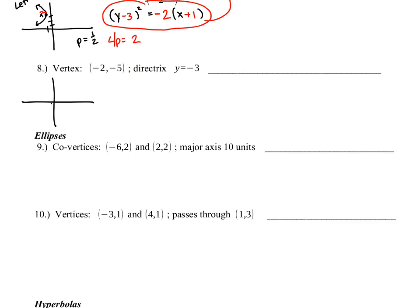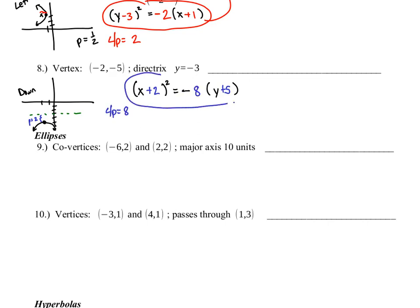Number 8: vertex at (-2, -5) and directrix line Y equals negative 3. That tells me the graph opens away from the directrix — opening downward. So I've got a downward-facing parabola with X squared equaling something negative. From my vertex, X value is negative 2 and Y value is negative 5. Since P equals 2 (the distance from the vertex to the directrix), 4P equals 8. That's our final answer.